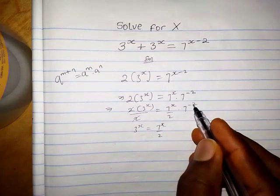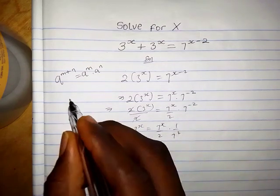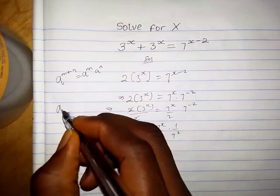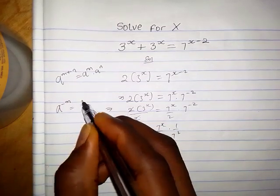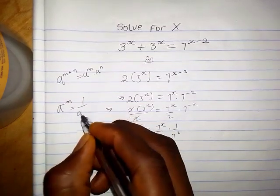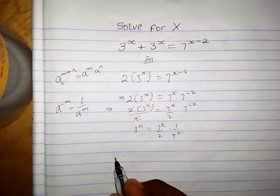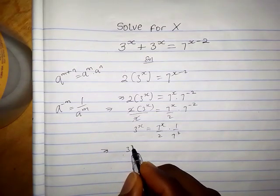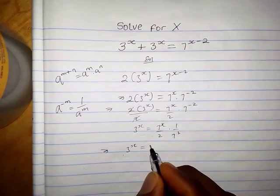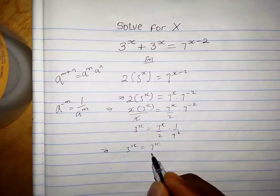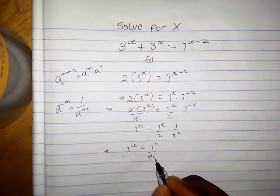This term can be written as 1 over 7 squared. That is, whenever we have a raised to the power minus n, it is the same thing as 1 over a raised to the power n. So this implies 3 raised to the power x equals 7 raised to the power x, and 2 times 7 squared is just 98.